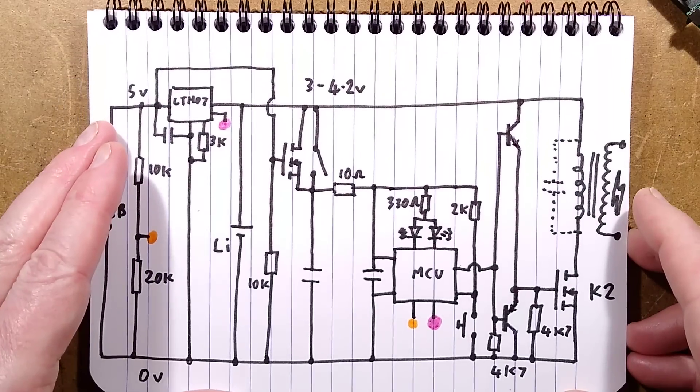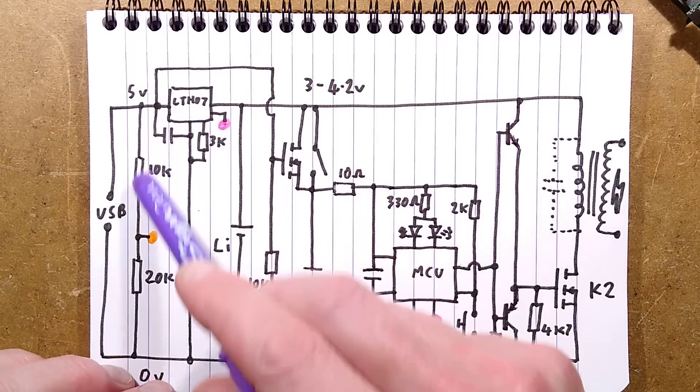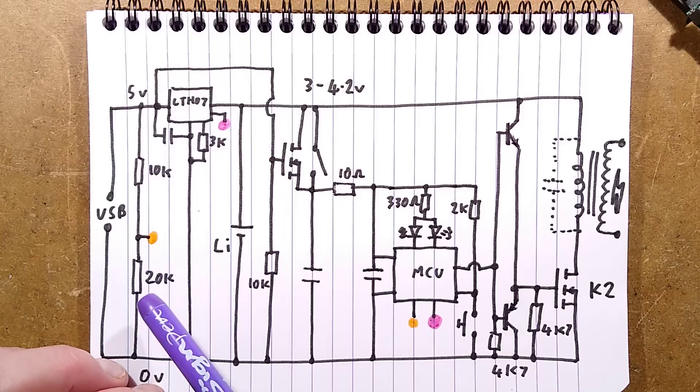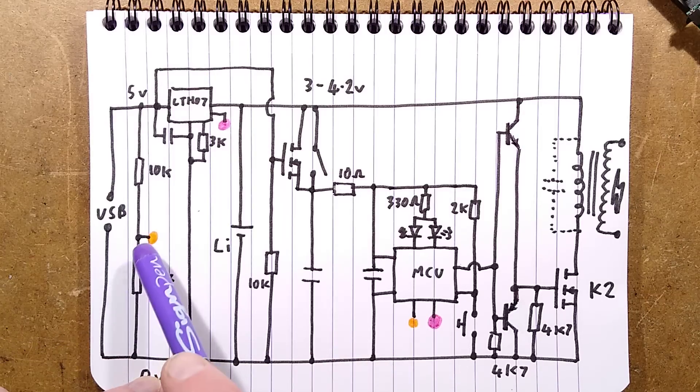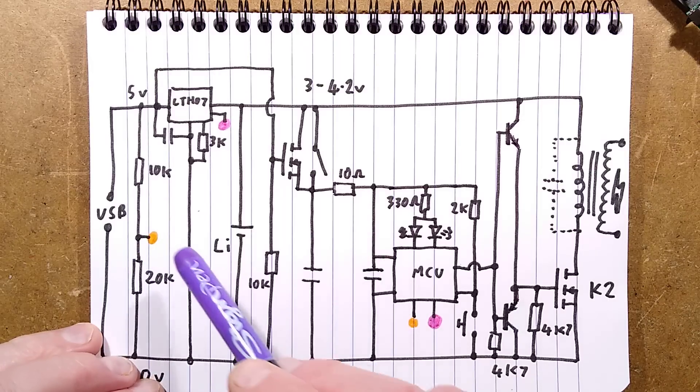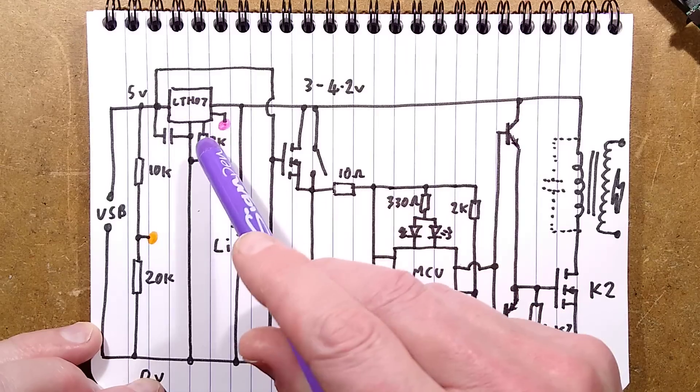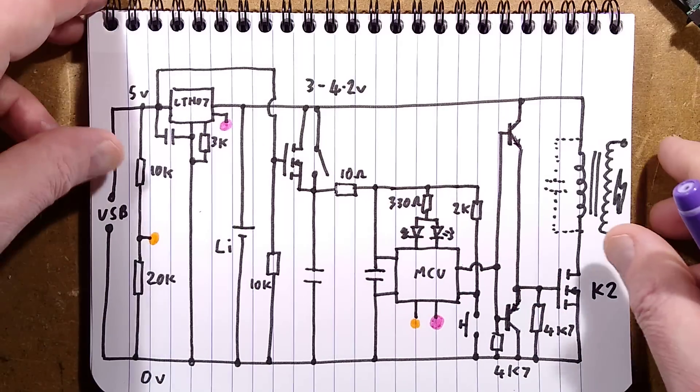The rest of the circuitry: it detects when power is applied to the microcontroller by this voltage tap, and also detects the LTH7 end of charge signal which goes to this connection. It's a very strange circuit.